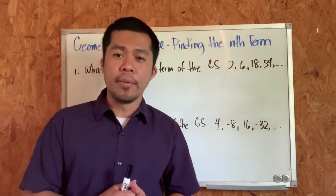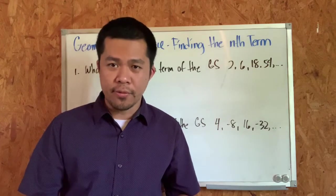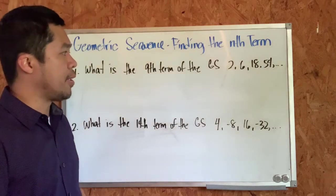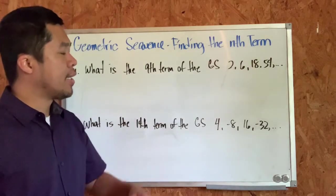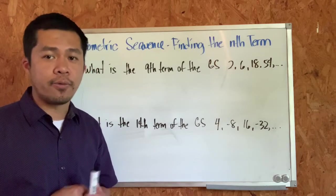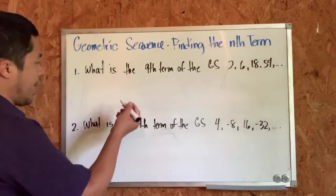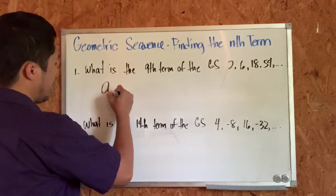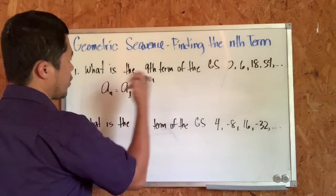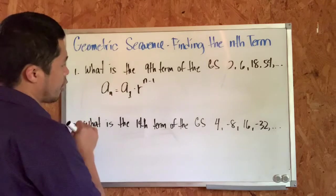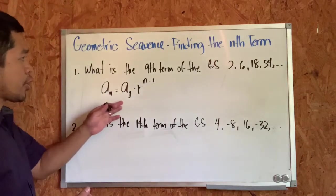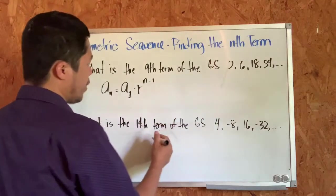Now let me give you examples of problems about today's lesson. Number one: what is the ninth term of the geometric sequence 2, 6, 18, and 54? The first thing we need to do is use the formula. The formula is a_n = a_1 times r raised to n minus 1. We need to know the first term, the common ratio, and the indicated term.